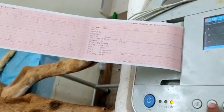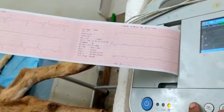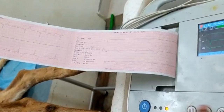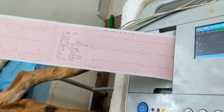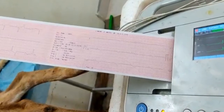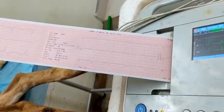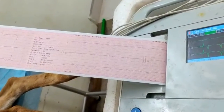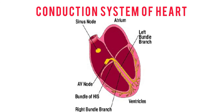Electrodes are placed on the skin, and the electrical stimuli are amplified to create a rhythmic strip by a machine that consistently produces representations of the heart's electrical activity. The conduction system of the heart involves the SA node, AV node, bundle of His, and the left and right bundle branches.